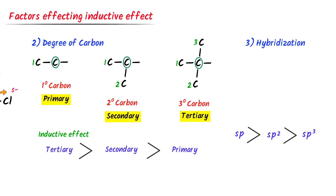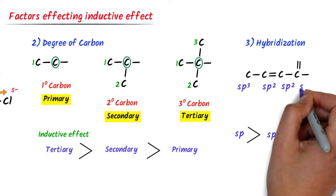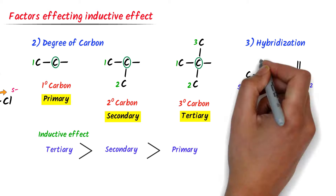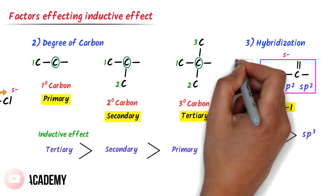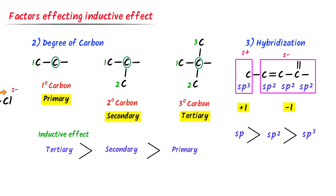For example, consider this compound. We can see that this carbon is sp3 hybridized, this carbon is sp2 hybridized, and this carbon is sp hybridized. This group is negative I — a partially negative charge will appear on it because it is sp hybridized. Note down this order of hybridization.